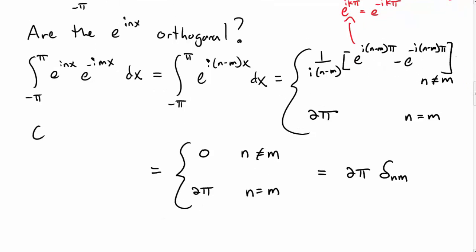Or I can write that as 2π δ_mn. So it turns out that the complex exponentials are orthogonal in very much the same way that the cosine functions were orthogonal.